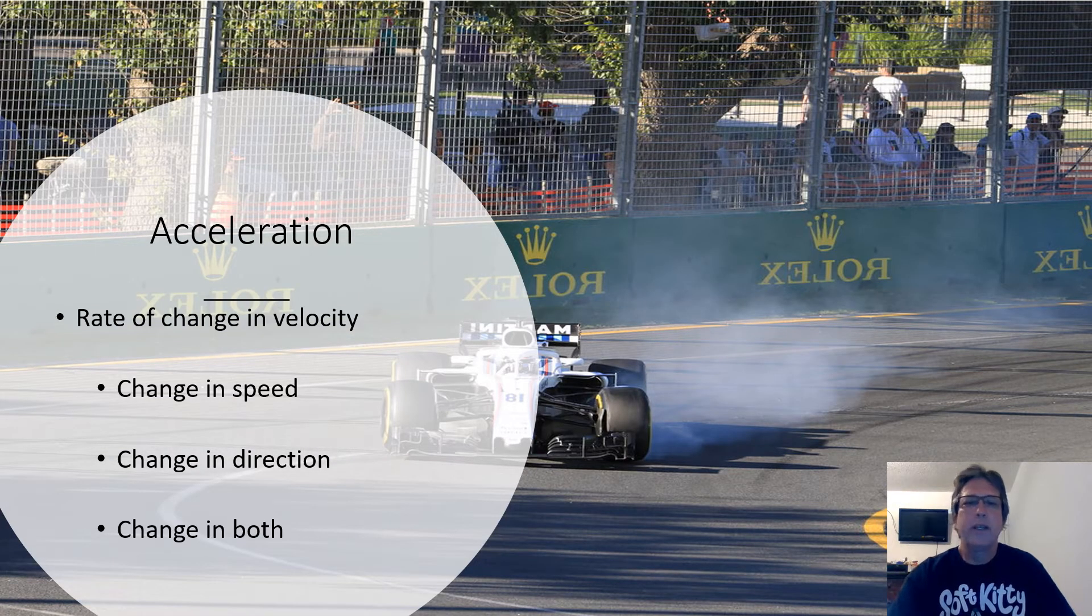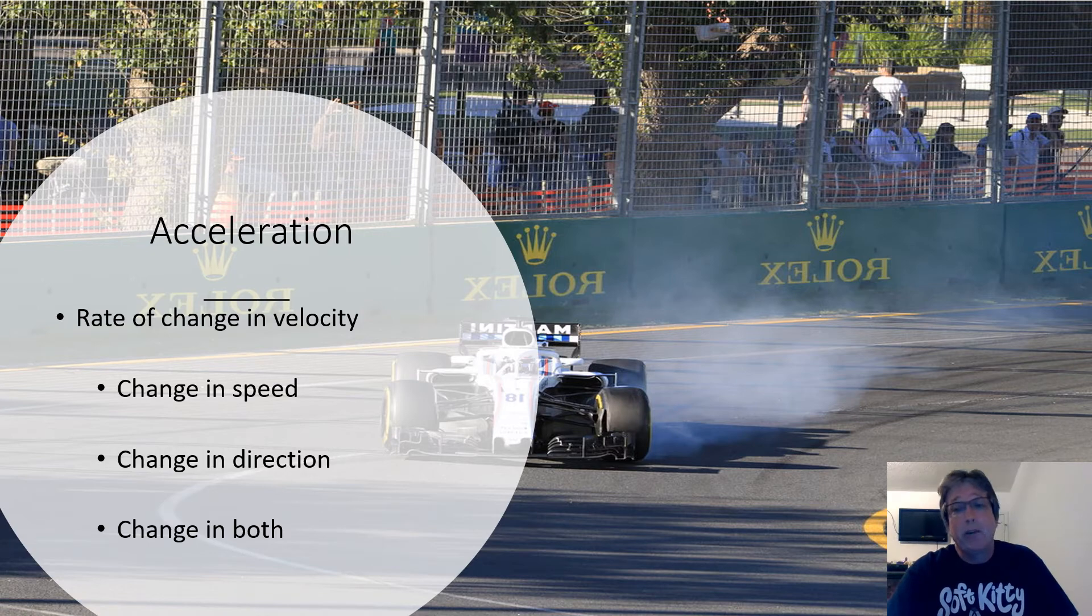Okay, well, most of the time in the real world, when we go to change direction, we change speed too. Kind of like this race car here, you notice that he's locking up the brakes as tires are smoking in an effort to slow down as he makes the curve. We usually slow down when we turn curves when we're driving too. And we're still accelerating, because we're changing both speed and direction at the same time. Now, we call that deceleration when we slow down, but it's still an acceleration.